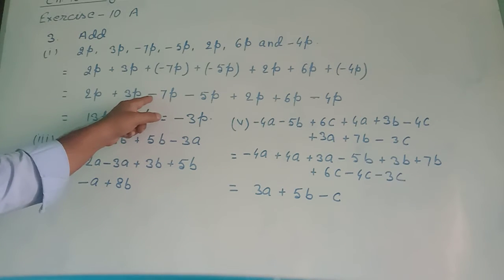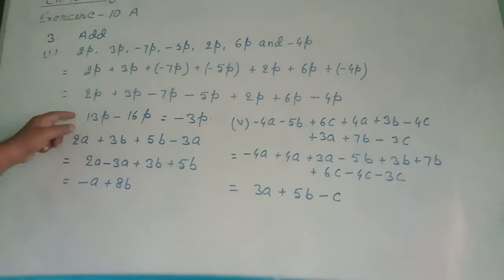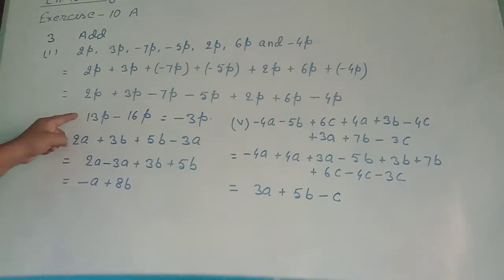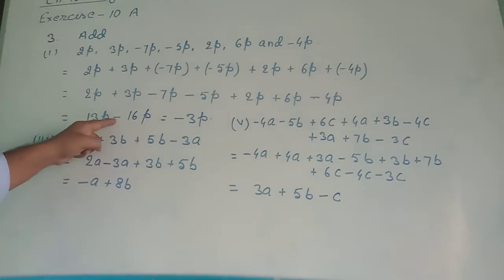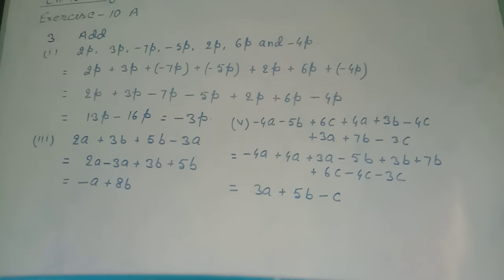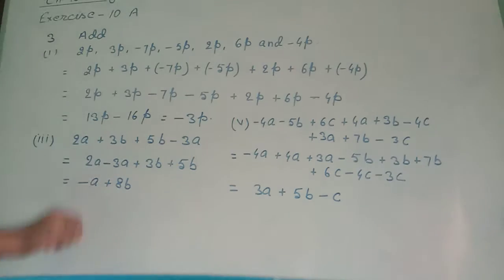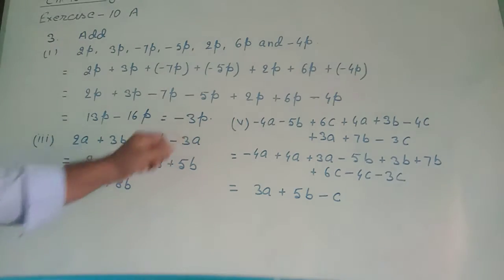The greater number is 16p and it has a minus sign, so minus will come. Since we have plus and minus, we subtract: 16p minus 13p equals 3p. The sign follows the greater term, which is 16p with minus sign.